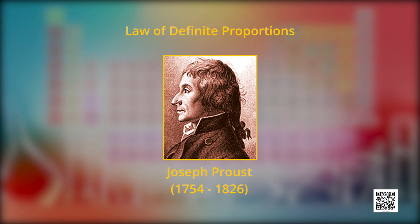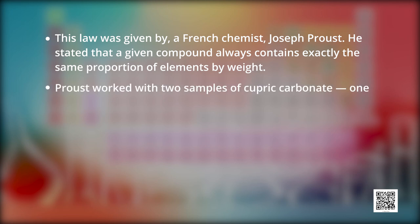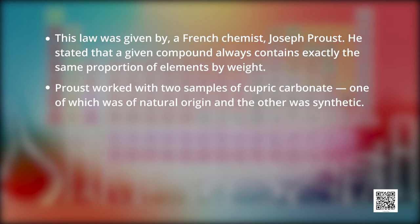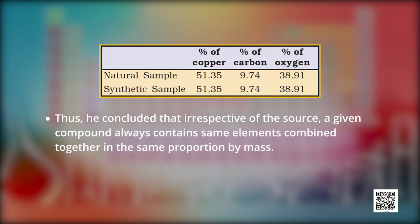Now let's see what is the law of definite proportion. This law was given by French chemist Joseph Proust. He stated that a given compound always contains exactly the same proportion of elements by weight. Proust worked with two samples of cupric carbonate — one of natural origin and the other synthetic. He found that the composition of elements in both samples was the same: the percentage composition of copper, carbon, and oxygen were identical. Thus, he concluded that irrespective of the source, a given compound always contains the same elements combined in the same proportion by mass.